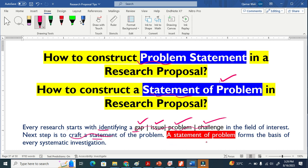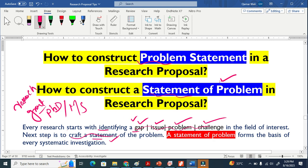A statement of problem forms the basis of every systematic investigation. If you are doing PhD, masters, or applying for research grant, you must have to identify a gap. Then you write about that gap and then it becomes your problem statement.